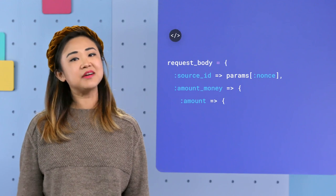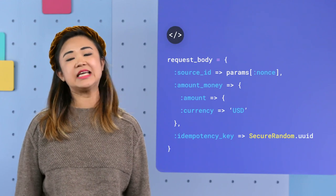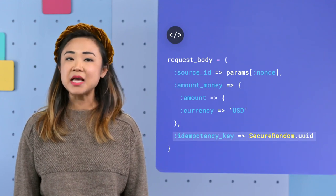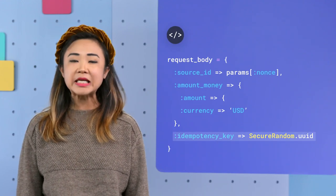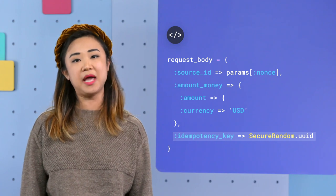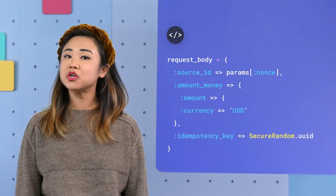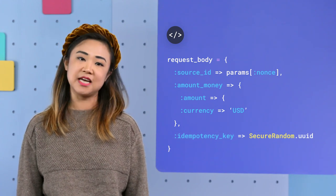Since networks can sometimes be unreliable, we might not know if a payment or inventory change went through when we don't get a response. Now this is where an item potency key comes in. By providing the same key with a request, you can repeatedly click that pay button and be assured it won't go through multiple times.